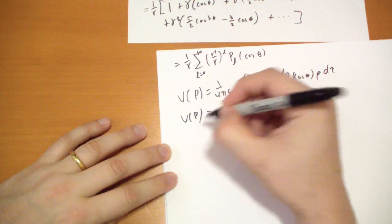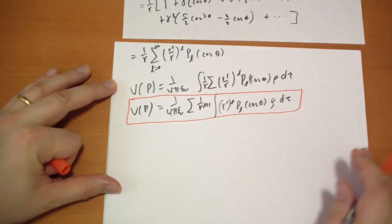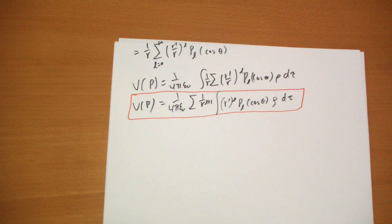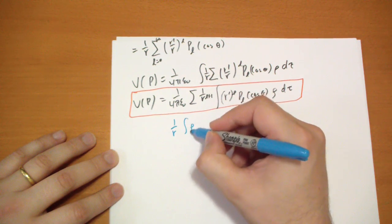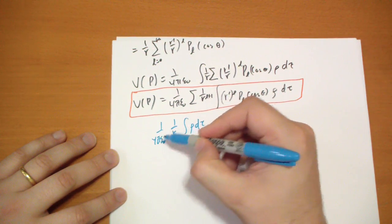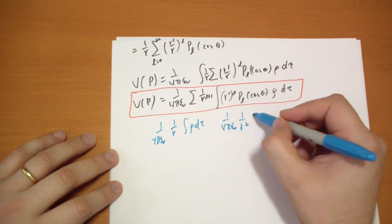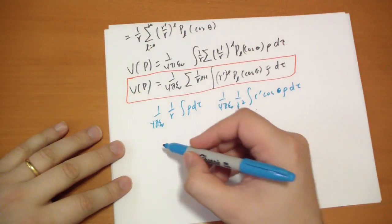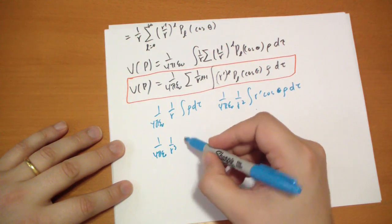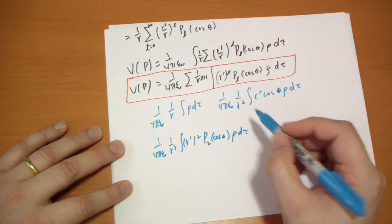This is our potential for any charge distribution, written out in a form that draws out the dipole, monopole, quadrupole, octopole terms. To see what I'm talking about, the first term is 1 over R with no R prime, P_L is 1, so it's just 1 over R times integral of rho d tau. The second term is 1 over R squared times the integral of R prime cos theta rho d tau. This would be the dipole term. Then you have the quadrupole term, which is 1 over R cubed times R prime squared P_2 of cos theta rho d tau, and so on and so forth.